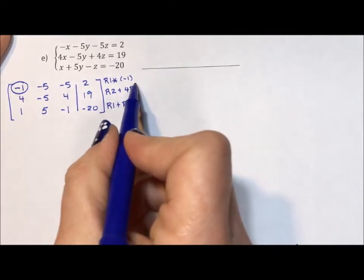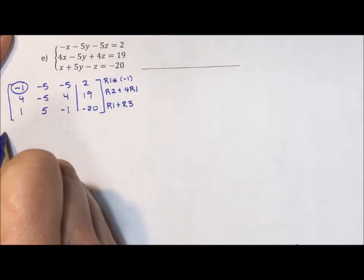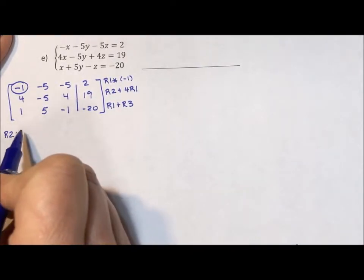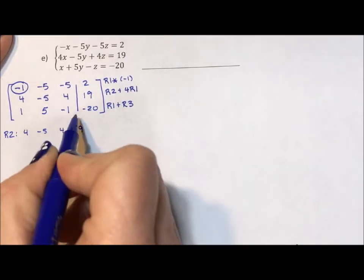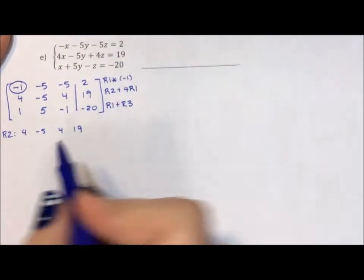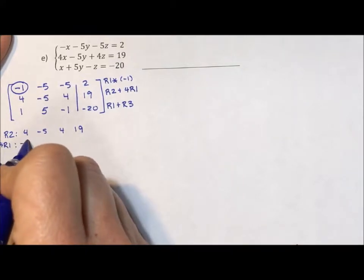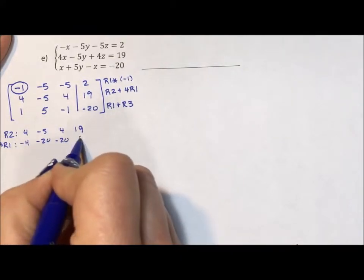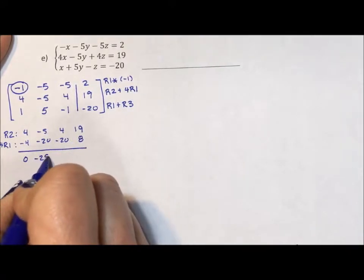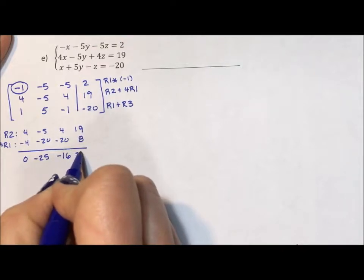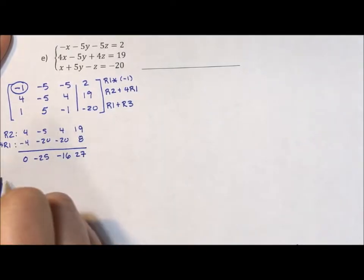I'm going to take these addition bits and pull them out so that I can do the math separately. Row 2 is 4, -5, 4, 19. 4 times row 1 is going to be -4, -20, -20, and 8. And when I add down, I'm going to get 0, -25, -16, and 27. I know these numbers look ugly. Don't worry. Everything will work out in the end.